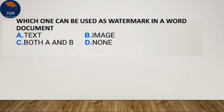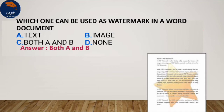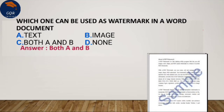Which one can be used as a watermark in a Word document? What is a watermark? The options are text, image, or both A and B. The answer is both A and B — text can be a watermark and an image can also be a watermark.